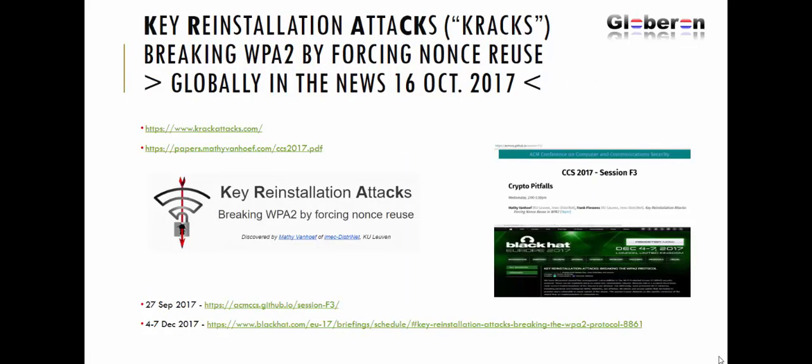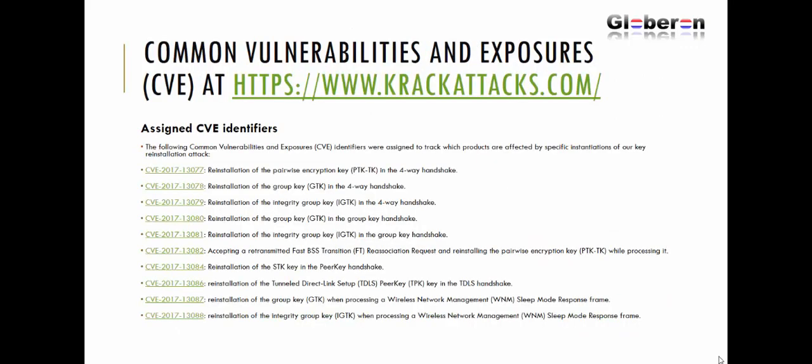KRACK — the Key Reinstallation Attack — was published on 6 October 2017. It was found by researcher Mathieu van Hoof of a university in Belgium. You can go to his research paper and the KRACK attacks website via the links shown. WPA2-PSK-CCMP-AES and also TKIP-RC4 can actually be compromised. He is also presenting at the Black Hat conference in Europe in December. The vulnerability is categorized in CVEs — Common Vulnerabilities and Exposures — and you can click on those CVEs individually to find more technical detail.